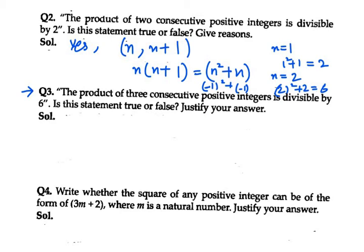We need to justify our answer. We're given the product of 3 consecutive integers: n, n+1, n+2. We need to prove whether it is divisible by 6 or not.